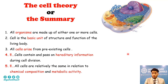The modern cell theory adds two more statements. Fourth, cells contain and pass on hereditary information during cell division. Fifth, all cells are relatively the same in relation to chemical composition and metabolic activity.